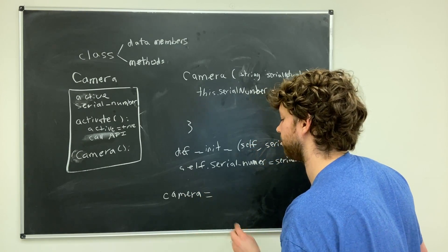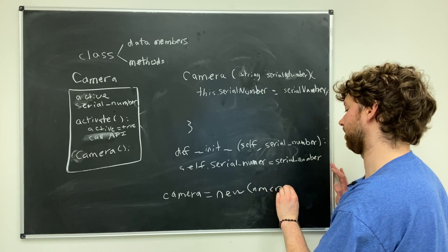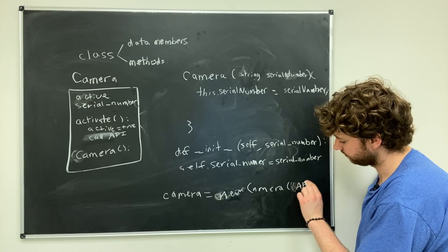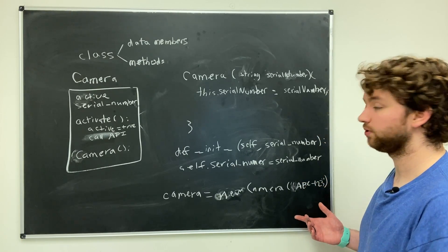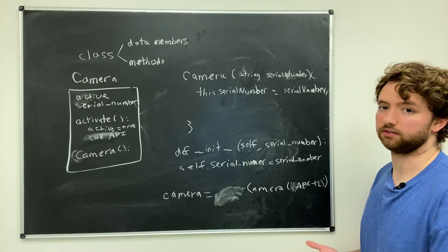Inside of C# you would say new camera, similar to how you would do it in Java, and then you pass in the serial number here. It's similar to how you do it in Python—you just leave that new off and it works exactly the same way.